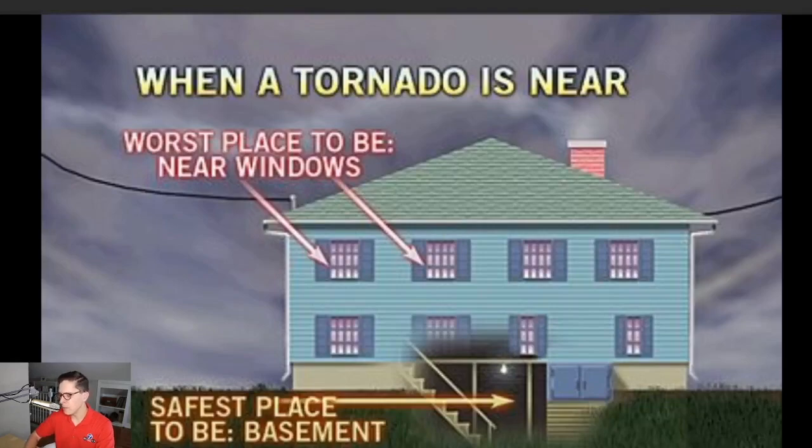The worst place to be would be near windows. You can be, of course, near a window to see outside, but you're also very close to flying debris, which is one of the most dangerous parts of a tornado is the debris that it picks up and throws around. The safest place to be would be near a basement.